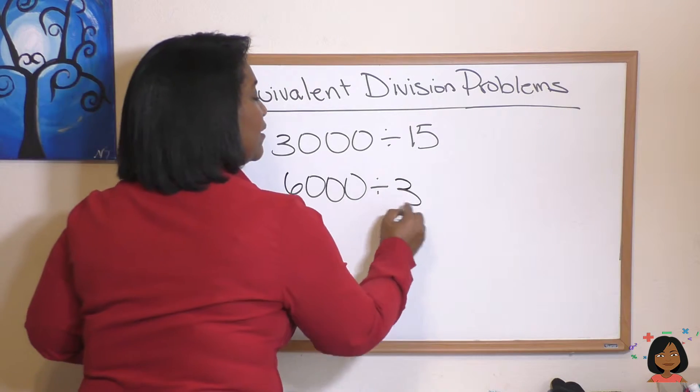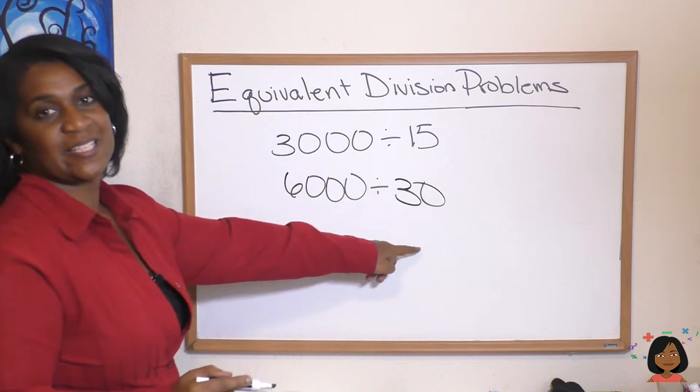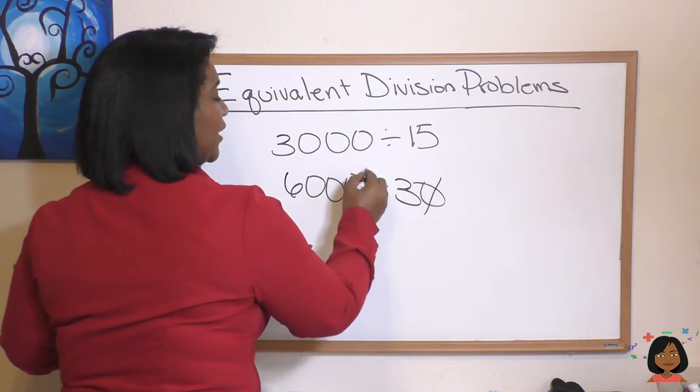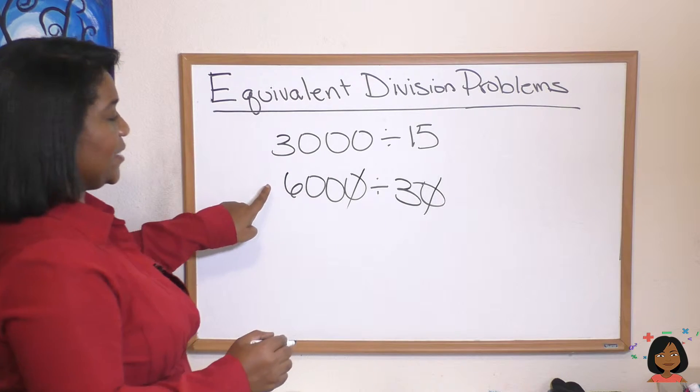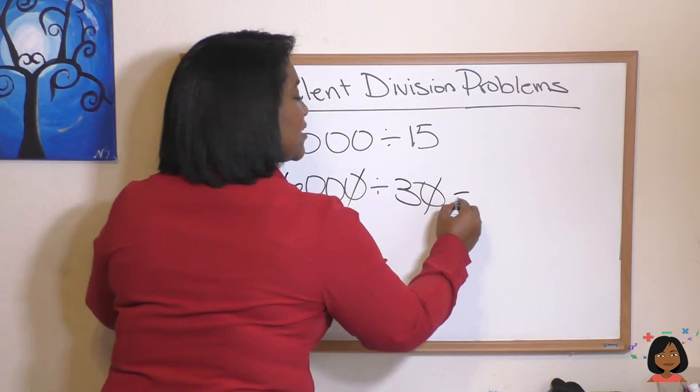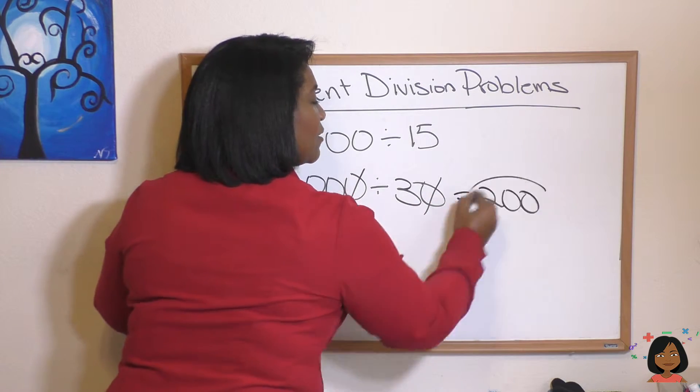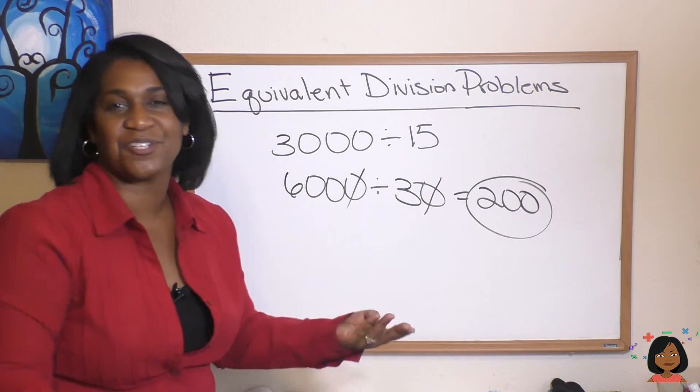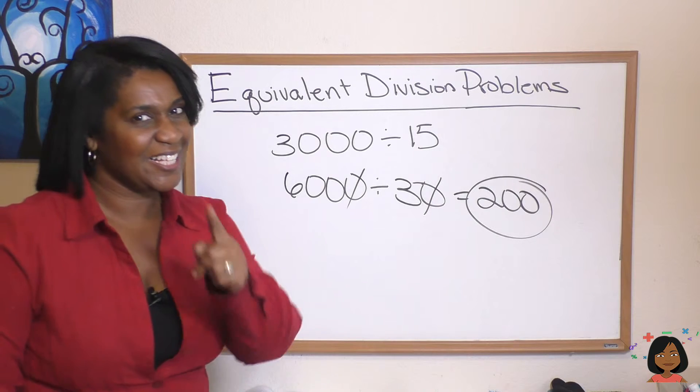That looks a lot easier to divide. I can get rid of a zero here, I can get rid of a zero there, so it's 3 into 600, which we know is the same thing as saying 200. And all I did was just double it because it's the same relationship when you divide.